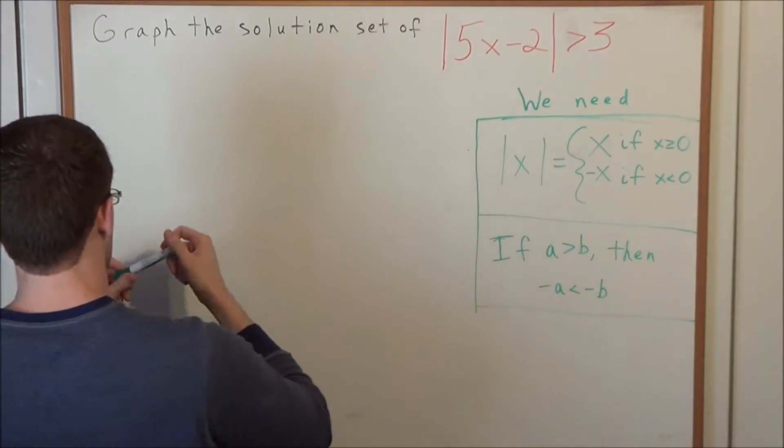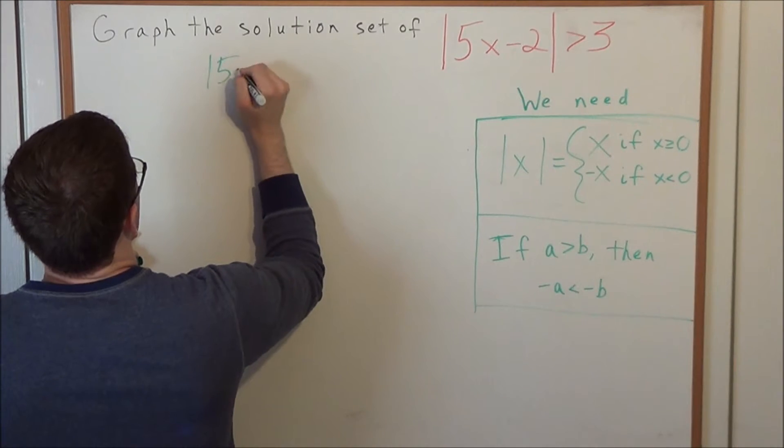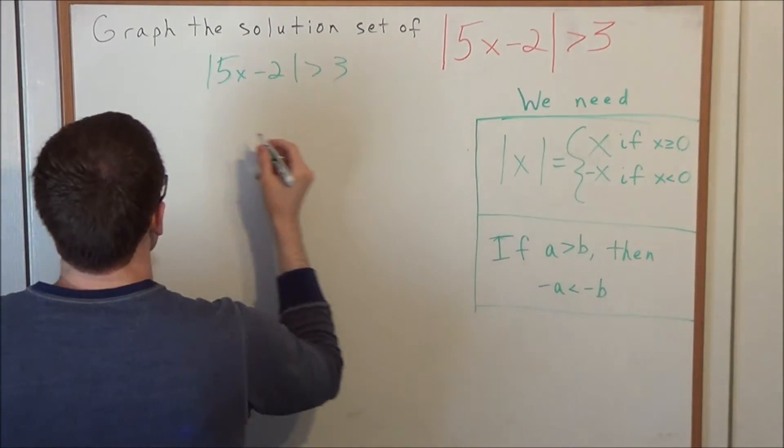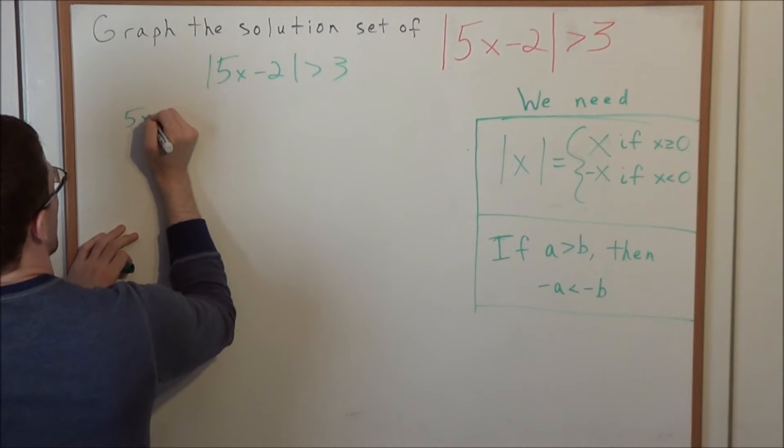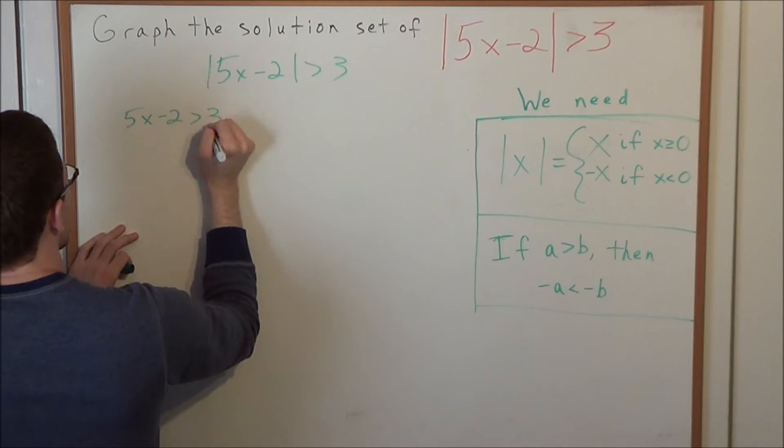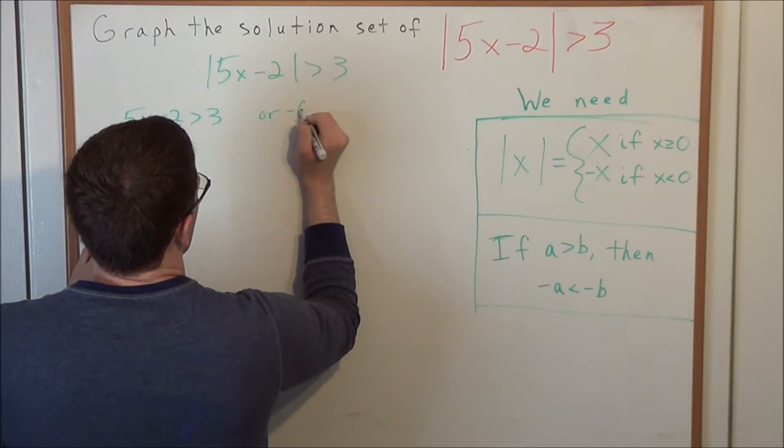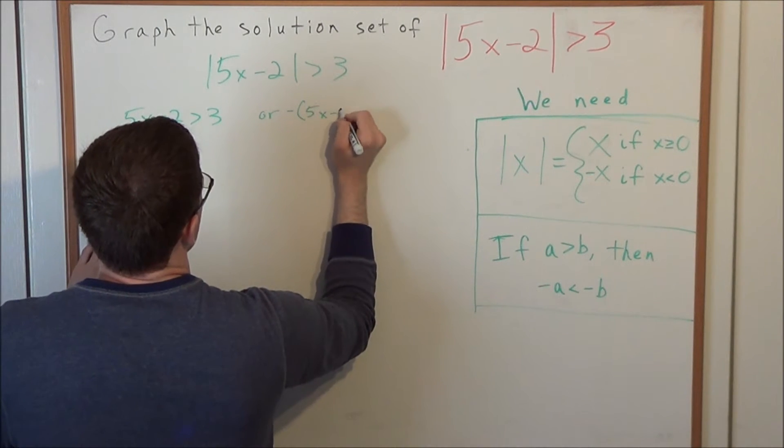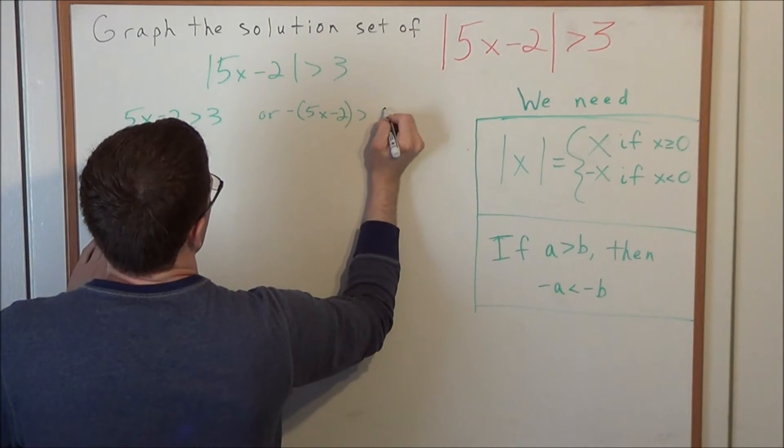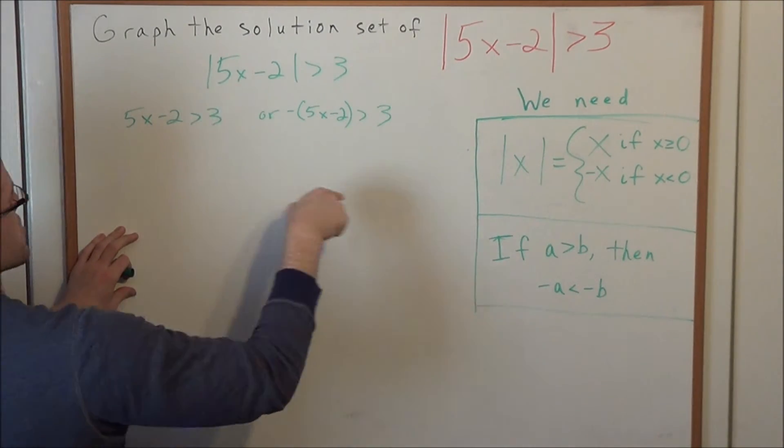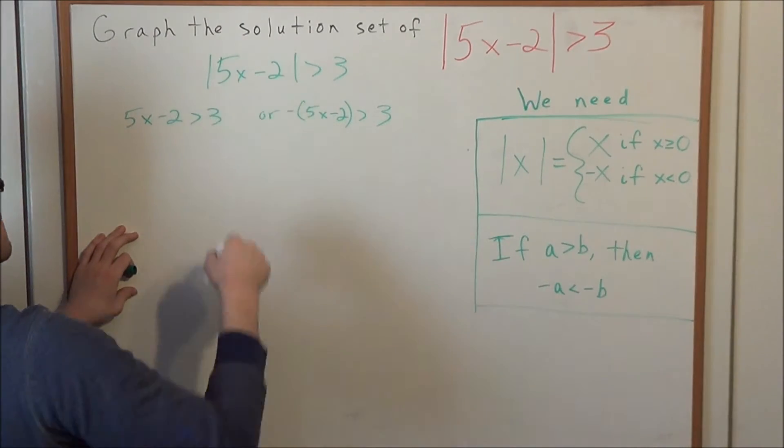So let's go ahead and get started with this now. We have the absolute value of 5x minus 2 is greater than 3. But remember, we could have two conditions. We have that either 5x minus 2 is greater than 3, or we have that negative 5x minus 2 is greater than 3. This is how we could evaluate this absolute value into two conditions when the input is 5x minus 2.